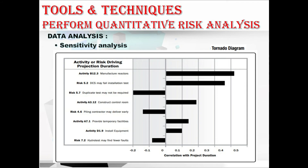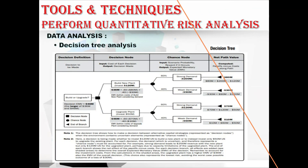The next data analysis technique is decision tree analysis. Decision trees are used to support selection of the best of several alternative courses of action. Alternative paths through the project are shown in the decision tree using branches representing different decisions or events. Each branch can have associated costs and related individual project risks, including both threats and opportunities. The endpoints of these branches represent the outcome following a particular path, which can be negative or positive.